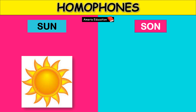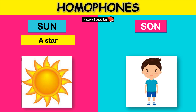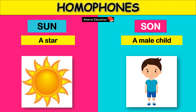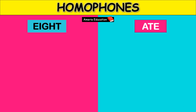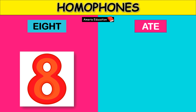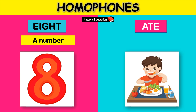S-U-N means a star. S-O-N means a male child. E-I-G-H-T means a number. A-T-E means to have a meal.